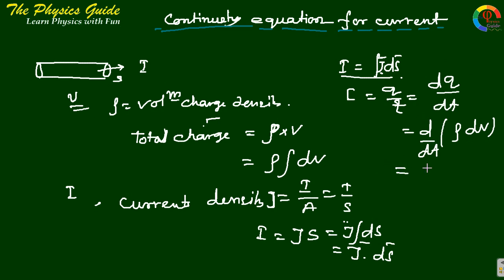This gives d/dt of Q equals ∫ρ dV, so I equals ∫(∂ρ/∂t) dV. This I = ∫J·dS equals the rate of decrease of the total charge.